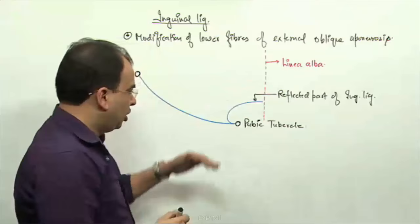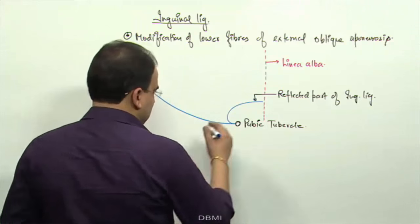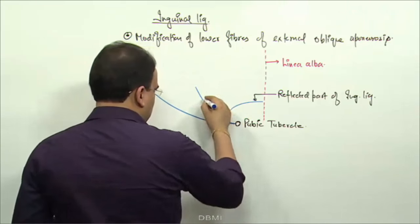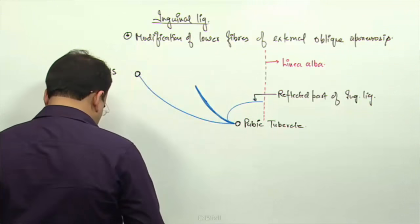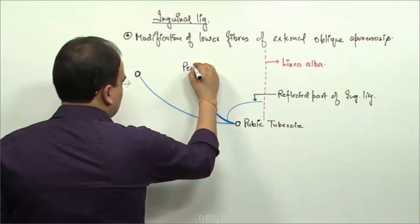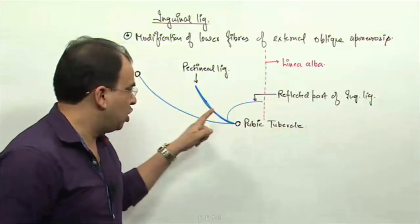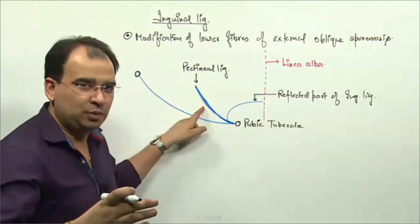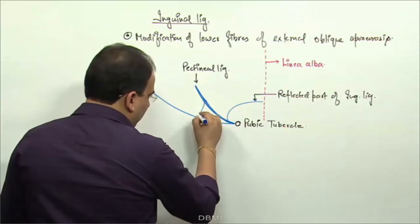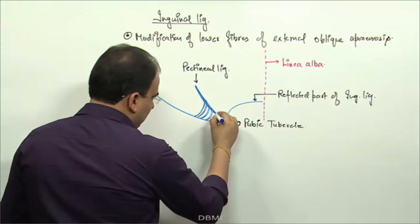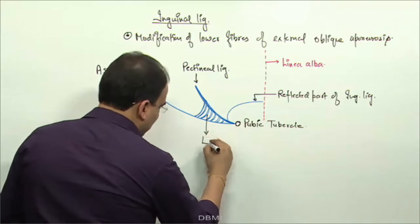On the superior ramus of the pubis, there is an extension of the inguinal ligament and that extension is called the pectineal ligament. This runs along the superior ramus of the pubis - that is another modification. And between the pectineal ligament and the inguinal ligament, this triangular modification - probably the most important of them all - is the lacunar ligament. That is the third modification.